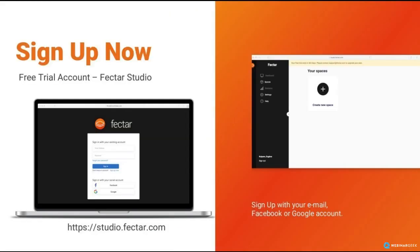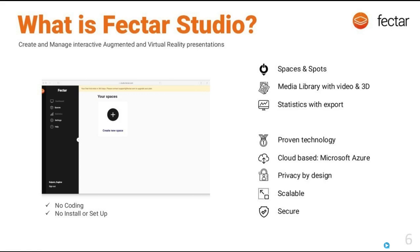You can sign up for the free trial account on Factor Studio through our website. Some of you may have already set up an account. It's automated — fill in your credentials, get an invitation to join the free trial, and go ahead immediately to create your first spaces. Factor Studio is a content management system for augmented and virtual reality. You create spaces — every project is called a space — and within each space you place spots, and those spots contain content.